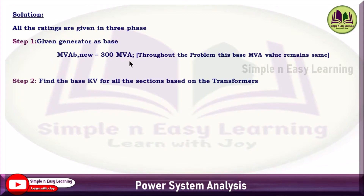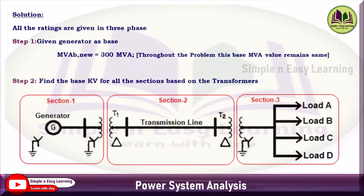Step 2: Find the base kV for all sections based on the transformer. Wherever a transformer appears, divide the circuit into HT and LT sides and find the base kV in each section. The primary side of transformer 1 is Section 1; the HT side of transformer 1 and HT side of transformer 2 form Section 2; the LT side of transformer 2 is Section 3.